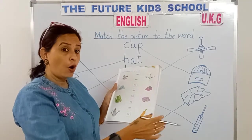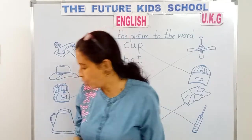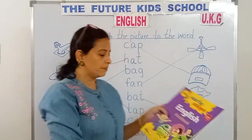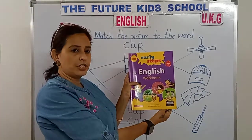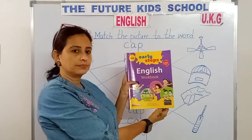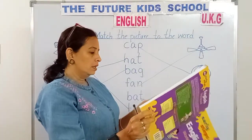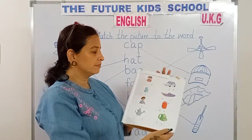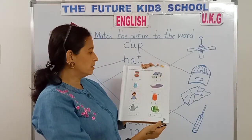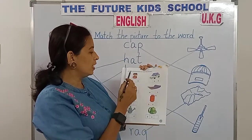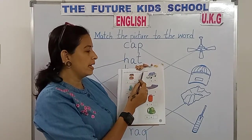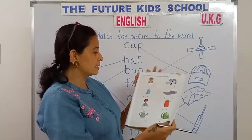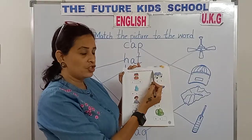This is for homework. Also take out your English workbook children. Page number 13. Fill in the missing letters to name the pictures.